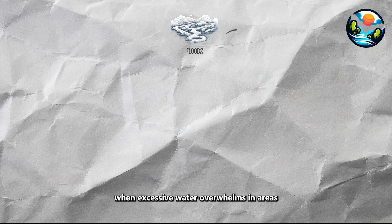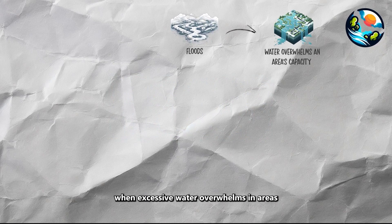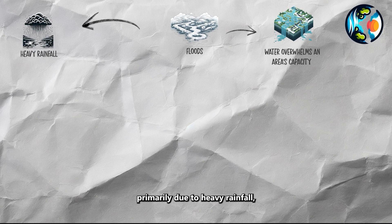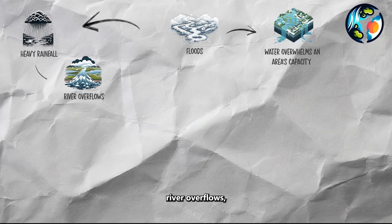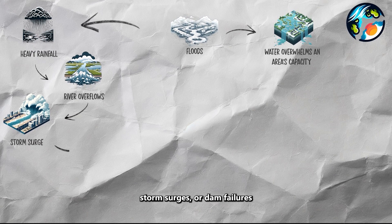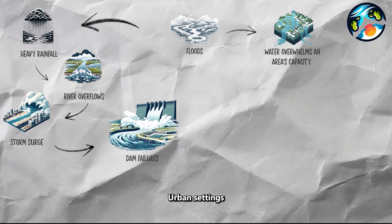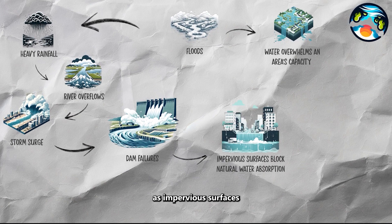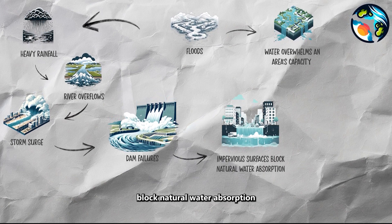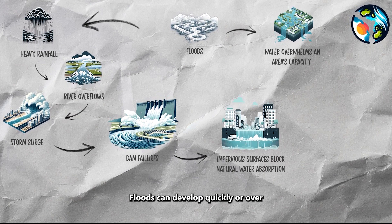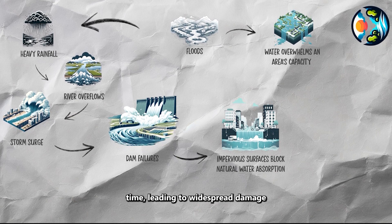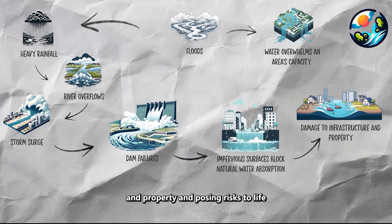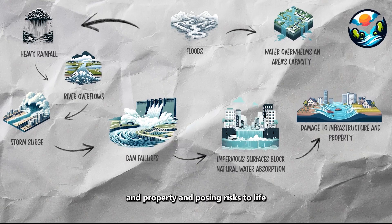Floods occur when excessive water overwhelms an area's capacity to contain it, primarily due to heavy rainfall, river overflows, storm surges, or dam failures. Urban settings are particularly vulnerable, as impervious surfaces block natural water absorption. Floods can develop quickly or over time, leading to widespread damage to infrastructure and property and posing risks to life.